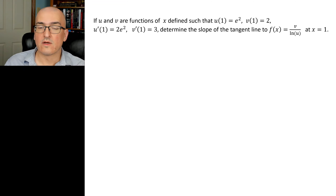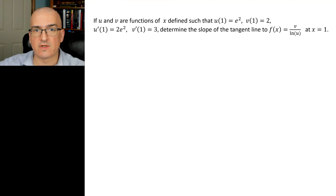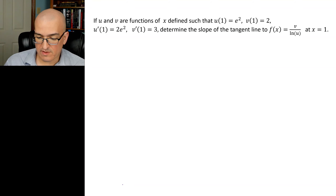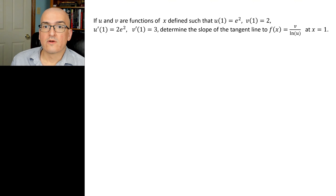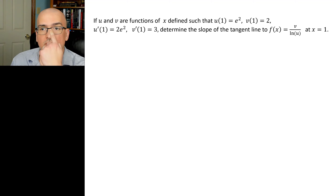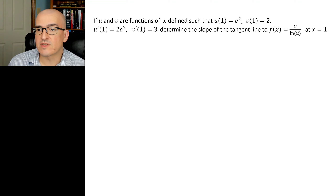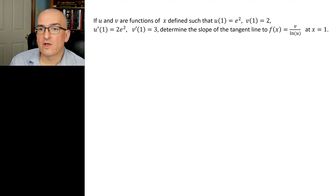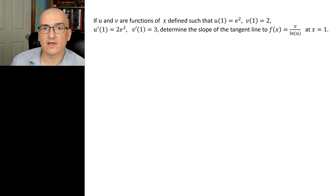Welcome back. In this video I'm going to go over some examples that are more test-related, test style problems involving functions and data. In this example we have u and v both being functions of x, defined such that u(1) = e², v(1) = 2, u'(1) = 2e², and v'(1) = 3. With all that information, determine the slope of the tangent line to the function f(x) = v / ln(u) at x = 1.